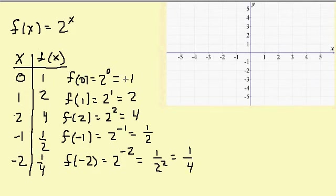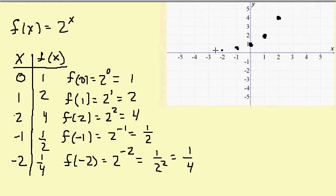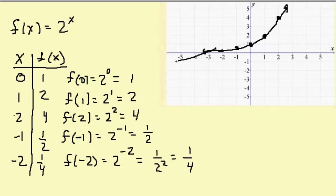I'll plot my points: (0, 1), (1, 2), (2, 4), (negative 1, 1 half), and (negative 2, 1 fourth). There's my graph. This line is getting closer and closer to the x-axis — don't draw it so that it crosses the x-axis, because this graph will never cross the x-axis.